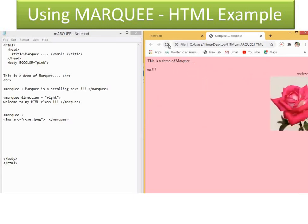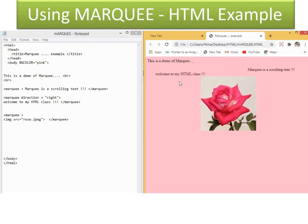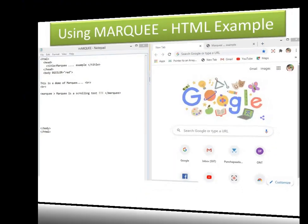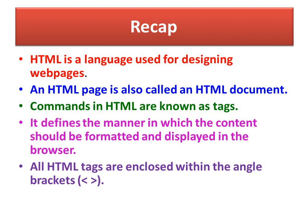Before we conclude, let us have a recap of what we learned in this lesson. HTML is a language used for designing web pages, also called an HTML document. The commands used in HTML are known as tags — they define the manner in which the content should be formatted and displayed in the browser. All tags are enclosed in angle brackets. Tags can be paired or unpaired — container tags and empty tags. To type HTML we need a text editor like Notepad or WordPad, and also a web browser such as Internet Explorer, Mozilla Firefox, or Google Chrome. Tags should be closed in the reverse order in which they were opened.